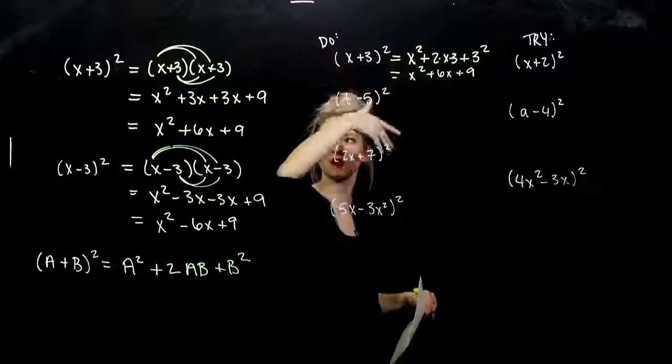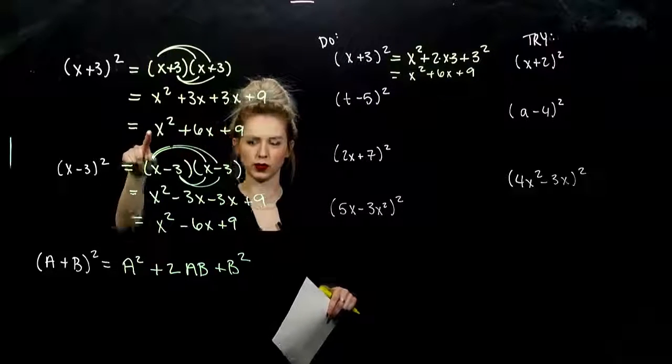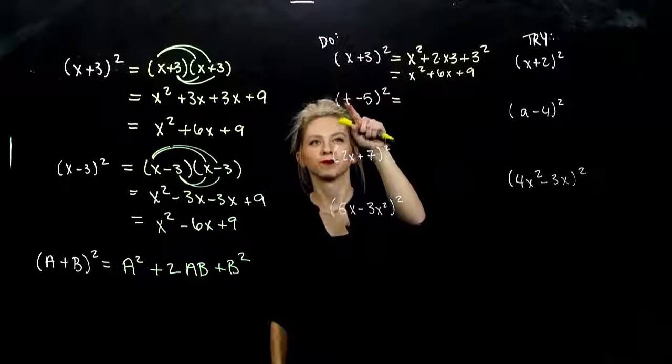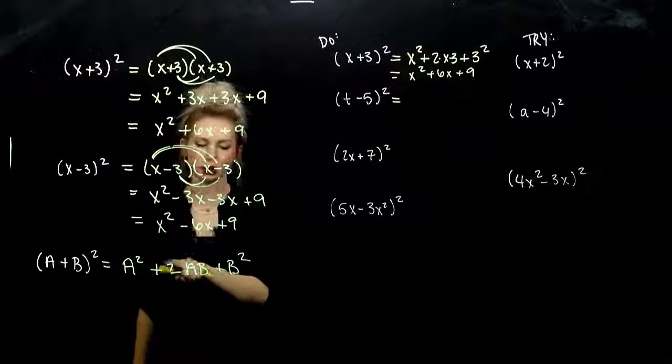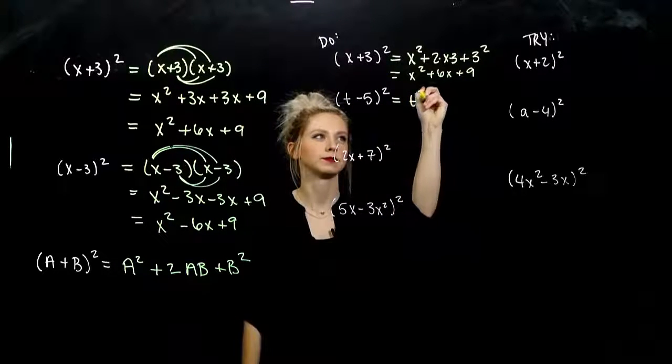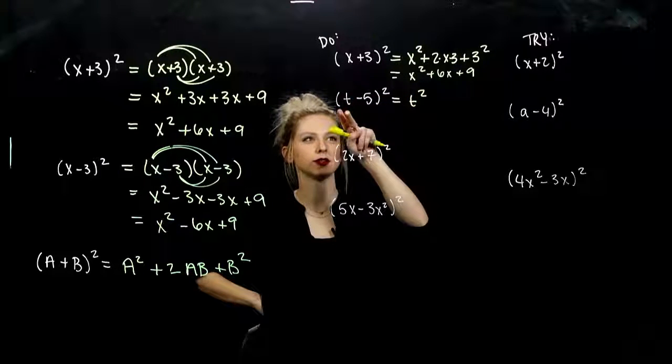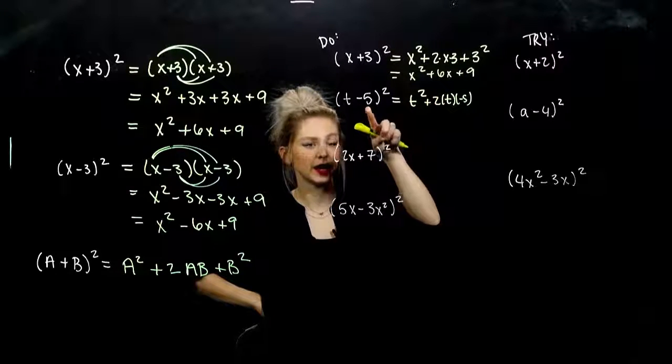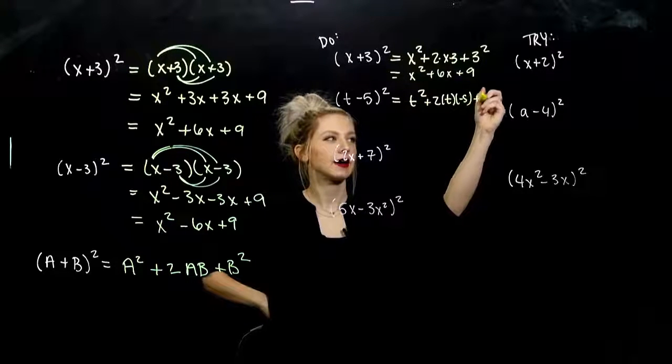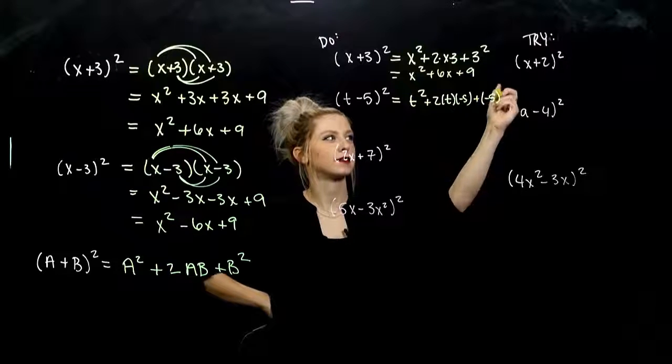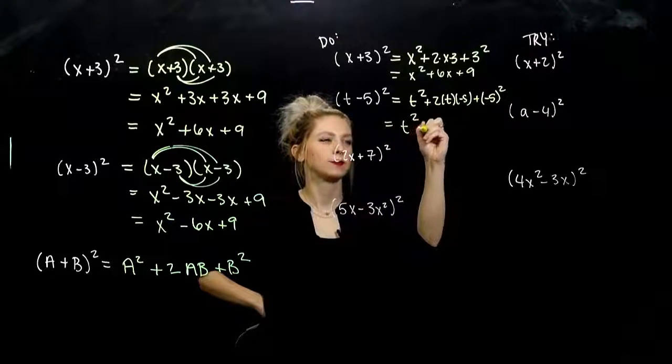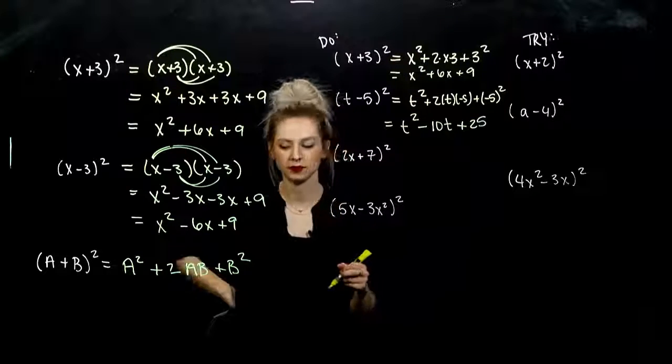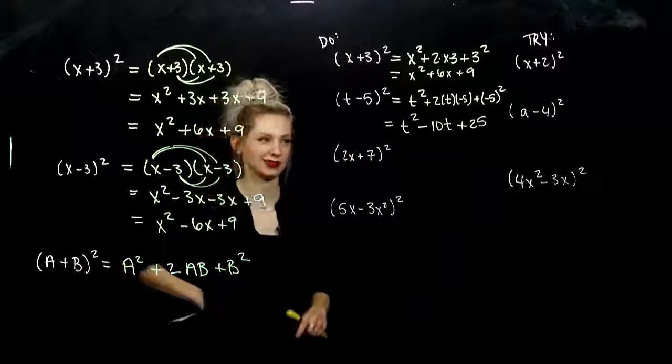If you don't like this shortcut or it doesn't come very quickly or naturally, you can always go back to foiling. But to continue practicing this little shortcut, I have subtraction. So what's it going to change? Just that middle term. First thing squared. And I have 2 times the first times the second, and the second one was negative. So you can see where that negative is coming from. And I add on my last term, it's negative 5 squared. So what do we get? T squared minus 10T plus 25. Same pattern but the sign is going to be different in the middle.